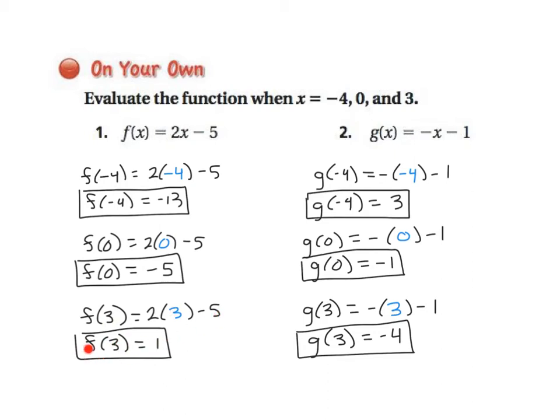So remember, this is telling us, it used the function f. I plugged in 3, and what I got out was 1. I used the function f, I plugged in 0, what I got out was negative 5. So it's a way to show input and output in the same math sentence.